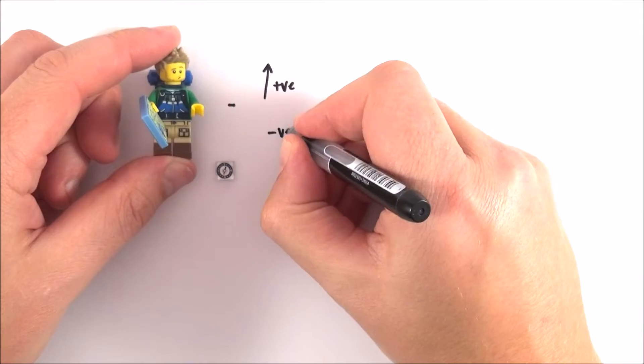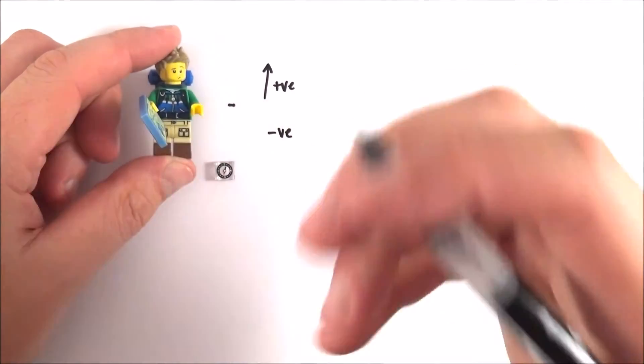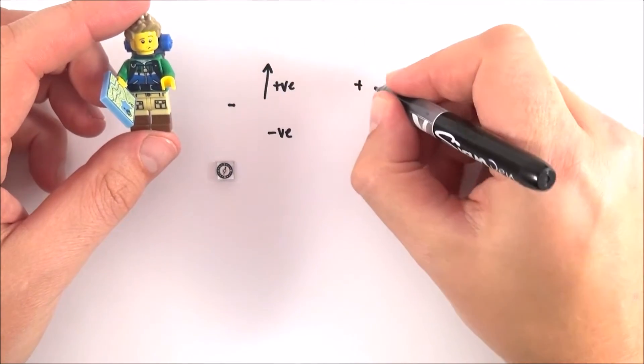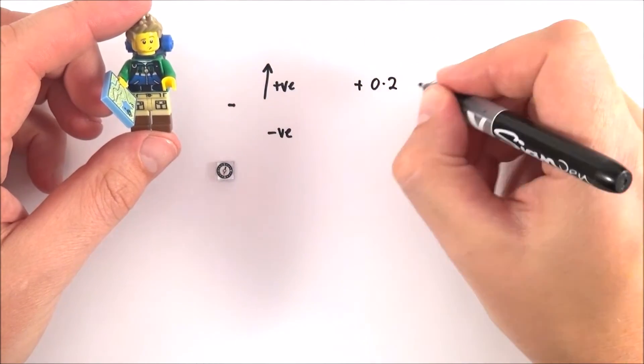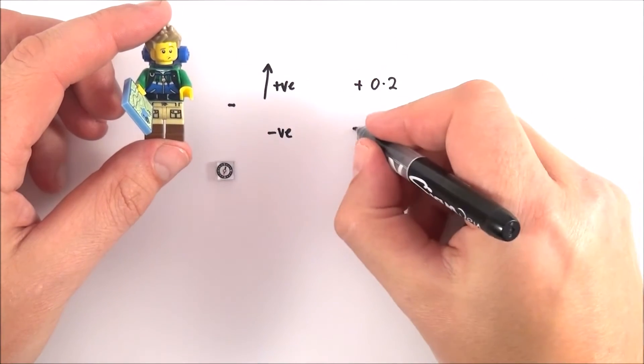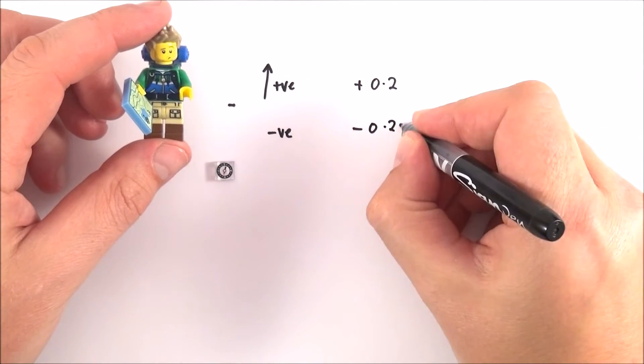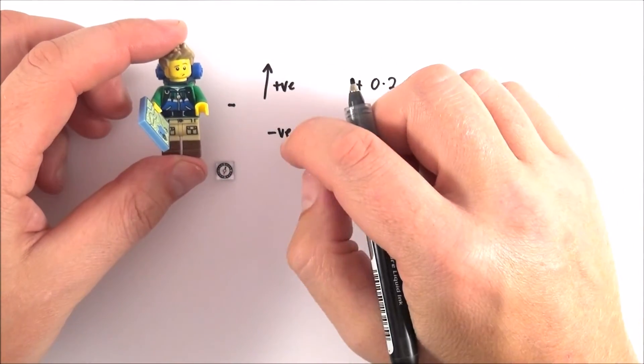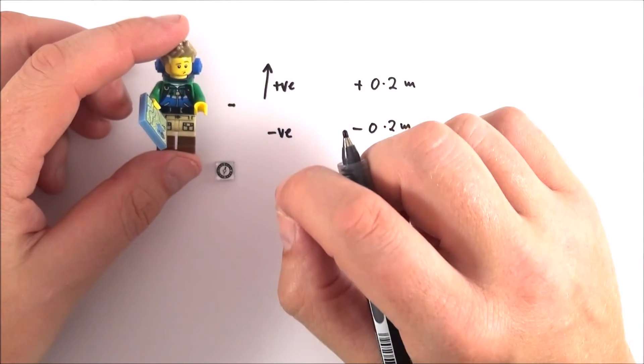So what we can then do, and this is useful for loads of different scenarios, is we can talk about something having a value of plus 0.2 meters in one direction and if it then goes the other direction it might have a value of minus 0.2 meters. And this is because it's a vector and vectors can be both positive and negative and sometimes this is really important.